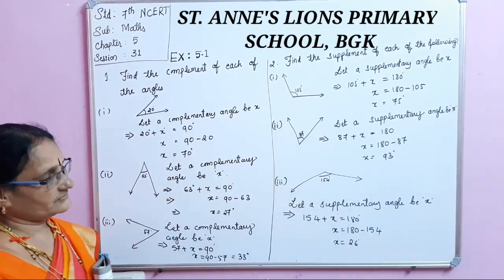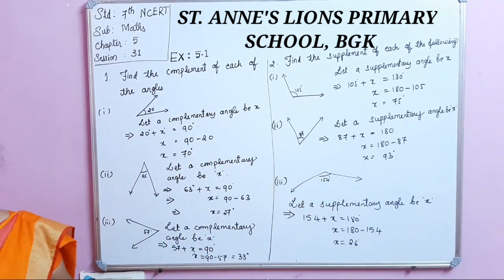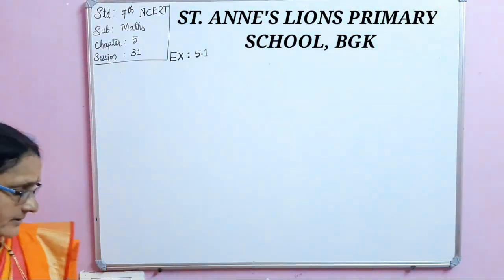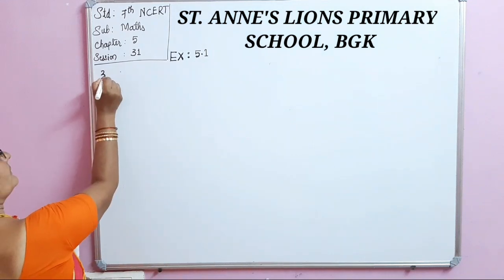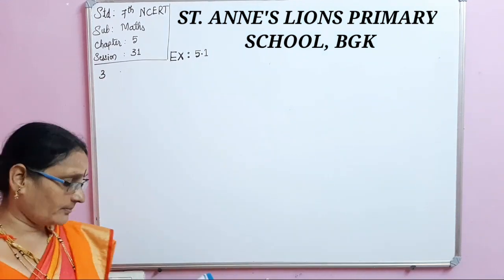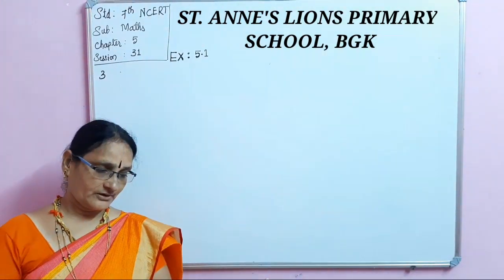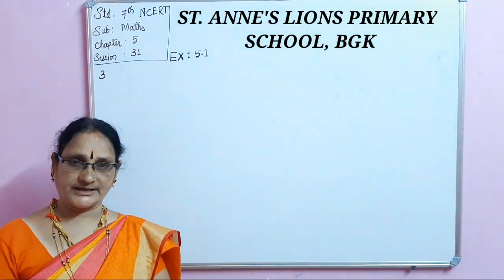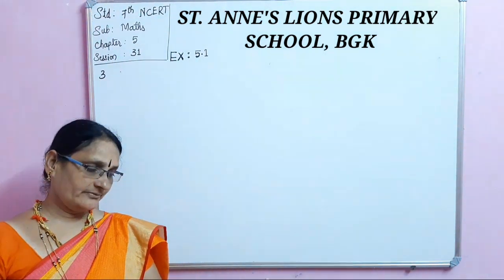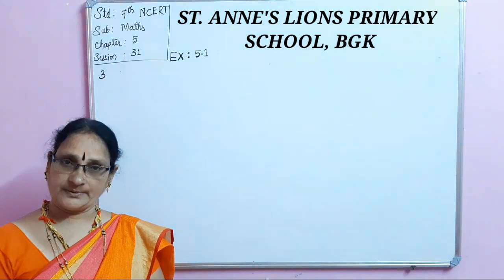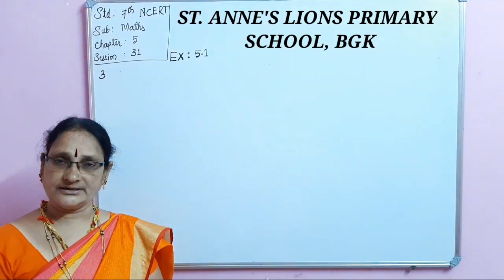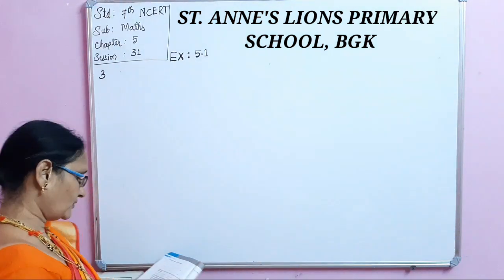This is the method of finding complementary and supplementary angles. For the third question, we have to identify which pairs are complementary and which are supplementary. By adding them — if we get 180 degrees they are supplementary angles; if we get 90 degrees they are complementary angles.